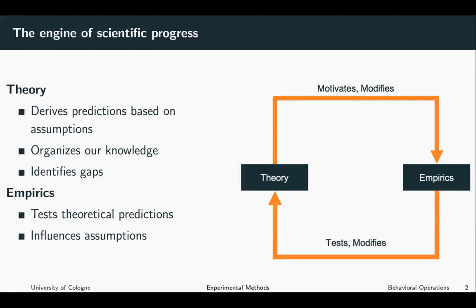On the other hand, empirics gives us an opportunity to test our theoretical predictions, and the observations made in the field can then influence our theoretical models — for example, by influencing the assumptions made in theory.